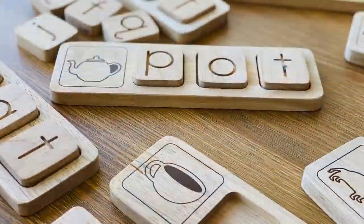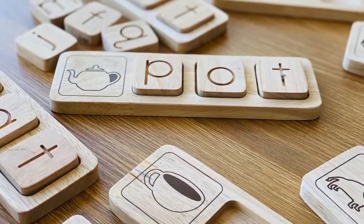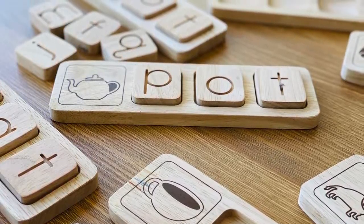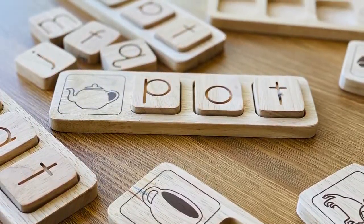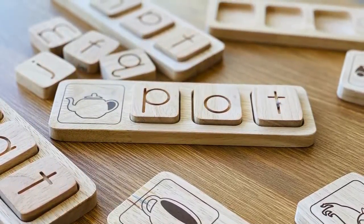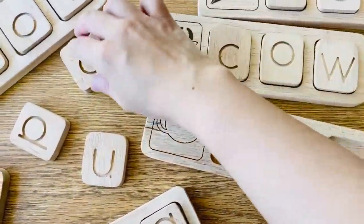This is a spelling exercise with 9 image printed blocks. Kids are to form the words using wooden pieces with lowercase letters. Each of the images represents a 3-letter word.